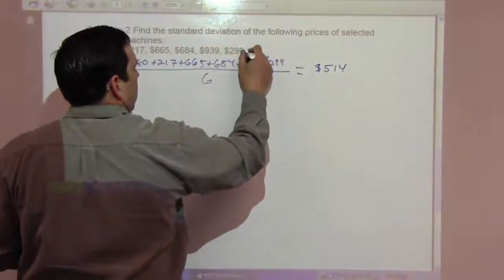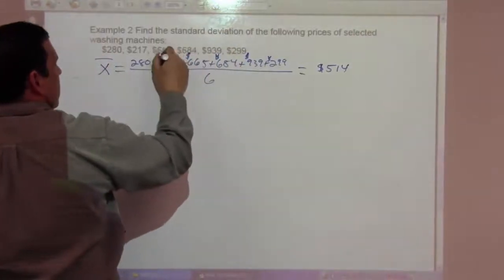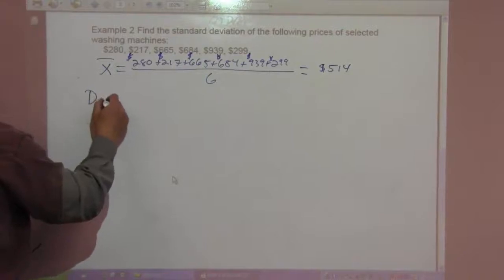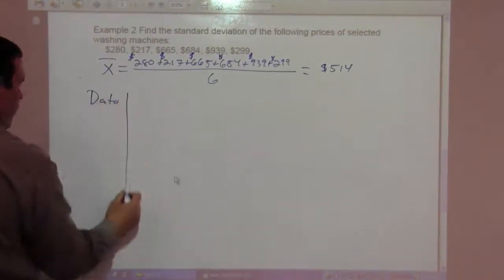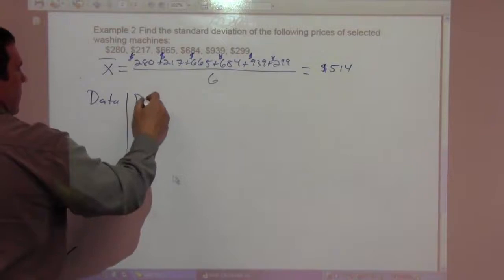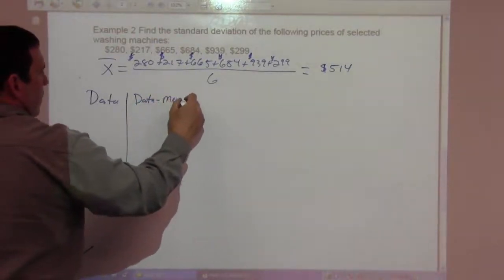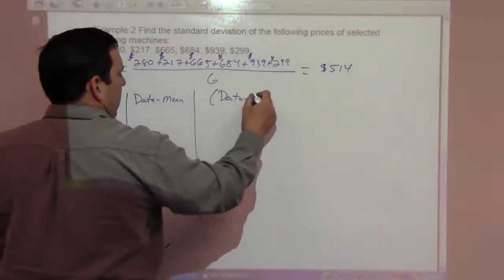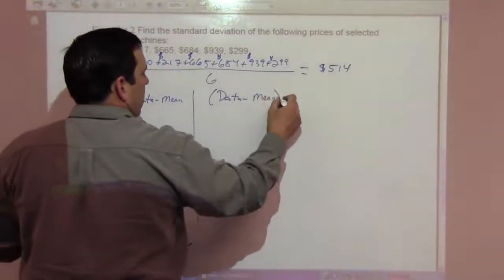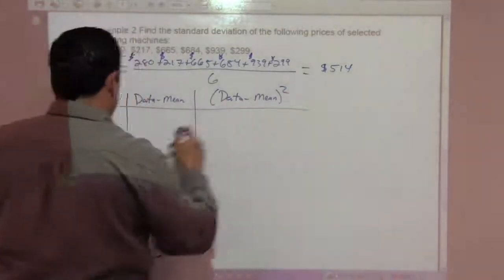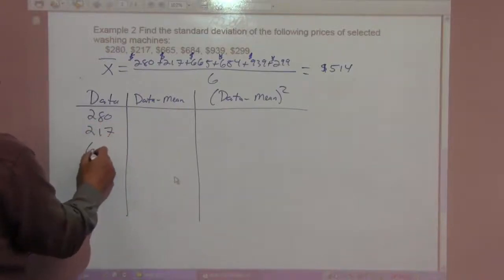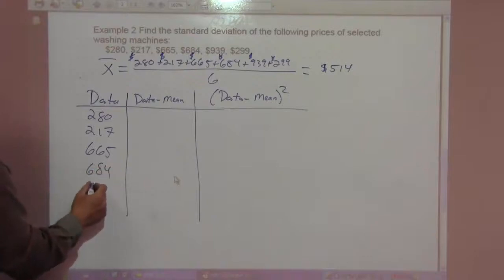So we have a column for data, a column for data minus mean, and a column for the data minus mean squared. For the data, we have 280, 217, 665, 684, 939, and 299.